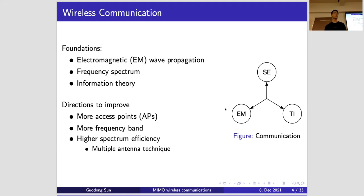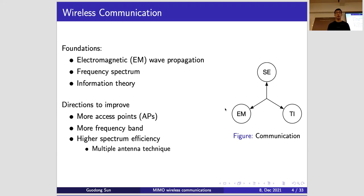MIMO is about wireless communication. The foundation of wireless communication is based on electromagnetic wave propagation, available frequency spectrum, and most importantly, information theory. The direction to improve wireless communication includes deploying more access points, allocating more frequency bands — which is what countries around the world do in 5G by allocating higher frequency bands — but most importantly we need higher spectrum efficiency. The answer to higher spectrum efficiency is multiple antenna technique.